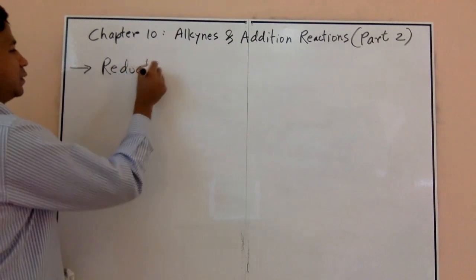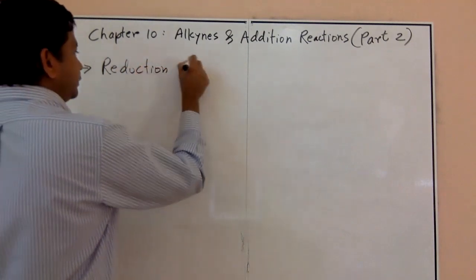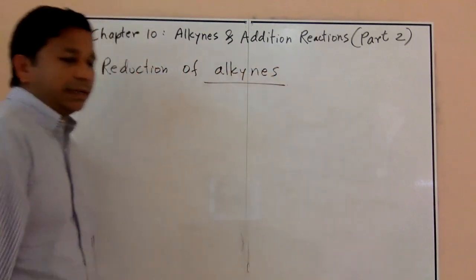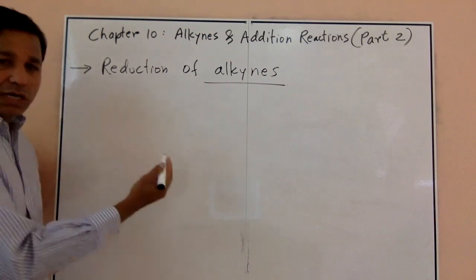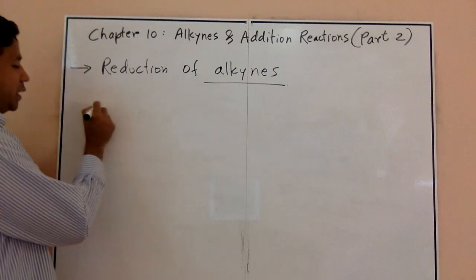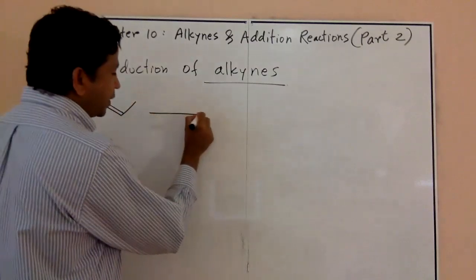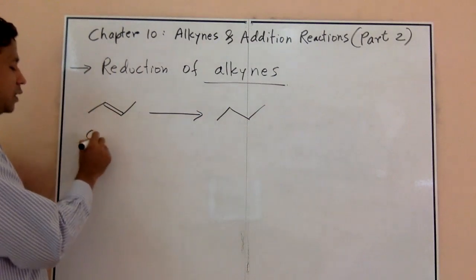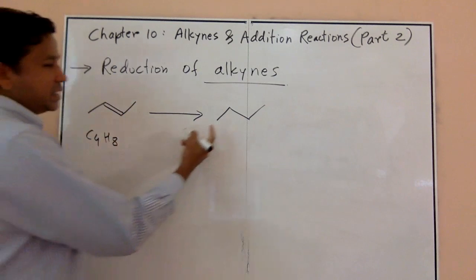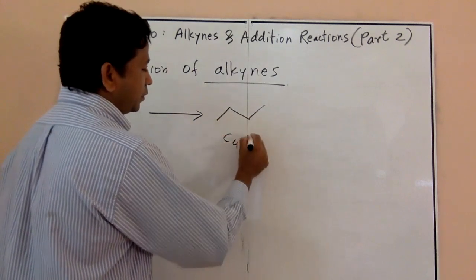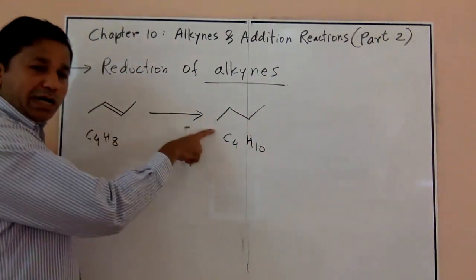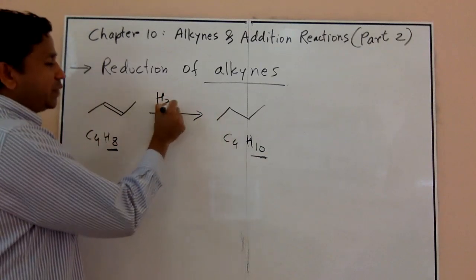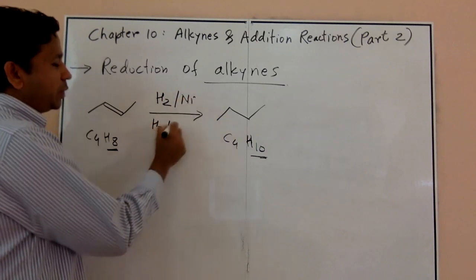Now for reduction reactions. This is the same concept as with a double bond. If I want to reduce a double bond to a single bond, I need to add two hydrogens. For example, C4H8 becomes C4H10 — that's the addition of two hydrogens. To add those two hydrogens, you use H2 with nickel, or H2 with platinum or palladium as a catalyst.